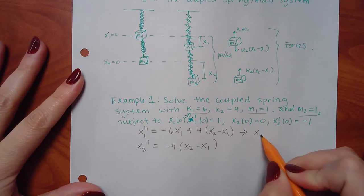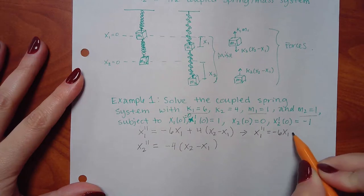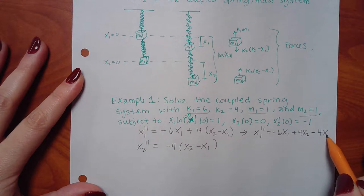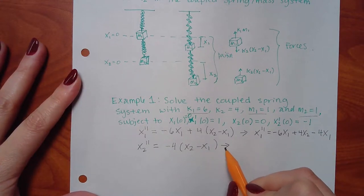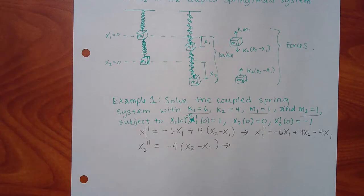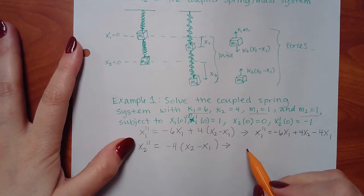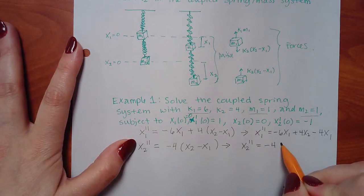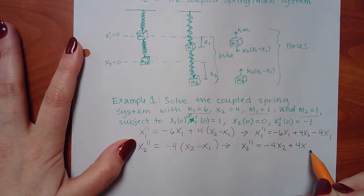So I'm going to distribute that 4. This is a system, so it's different. For X2 double prime, I'm going to distribute that negative 4.